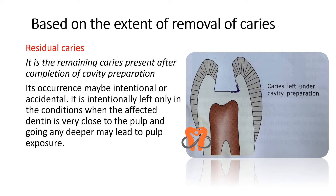Based on the extent of removal of caries, we have residual caries — defined as the remaining caries present after the completion of cavity preparation. You can see the darkened area left under the cavity preparation. Its occurrence can be intentional or accidental. Intentionally, it is left only when the affected dentine is very close to the pulp and going deeper may lead to pulp exposure. Otherwise, as seen in this diagram where there is distance between the cavity base and pulp horn, it is accidentally left.